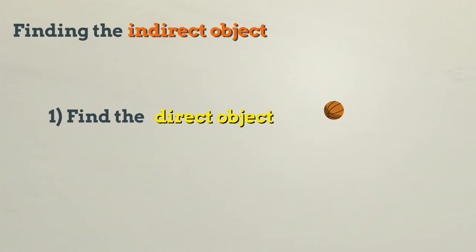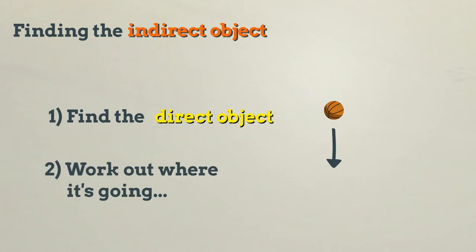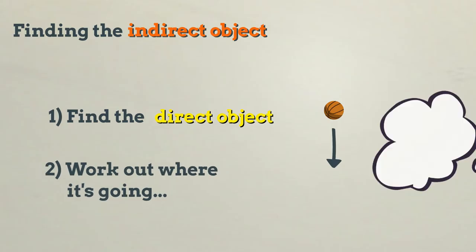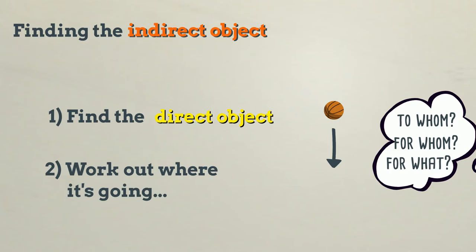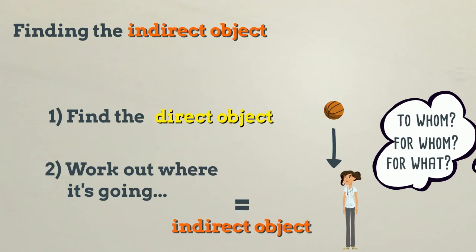To find the indirect object in a sentence, find the direct object and then work out where it's going by asking: to whom, for whom, or for what. This will be the indirect object.